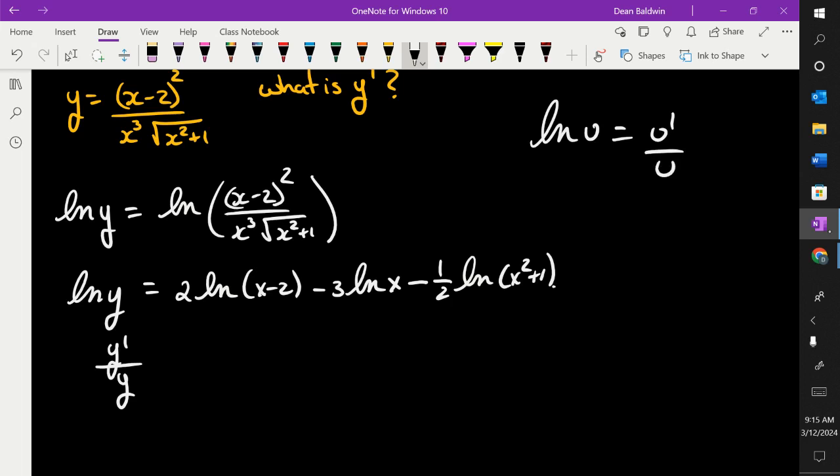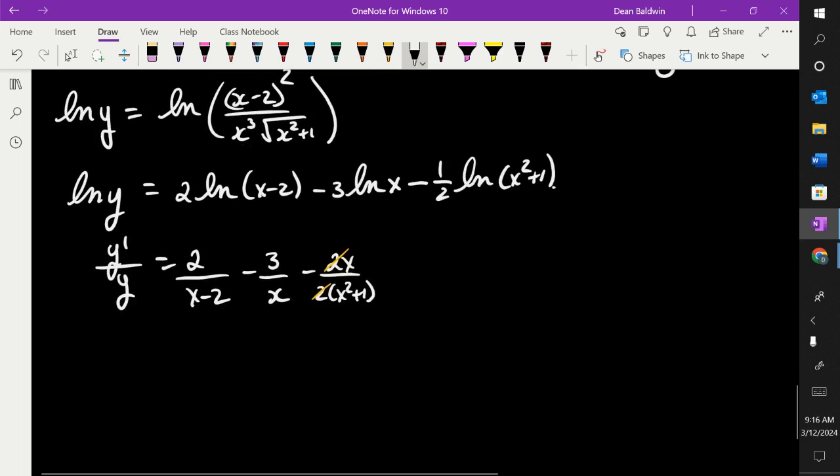So I got y primed over y is equal to, and then you do the derivative of all this stuff. Two over x minus two, three over x, with the 2x up top. And then these 2s would cancel. So I got that.